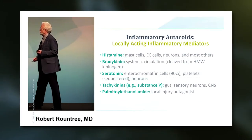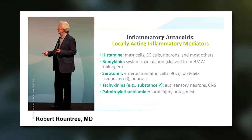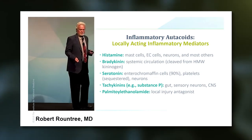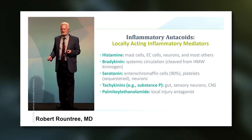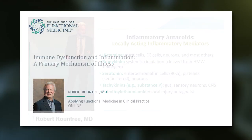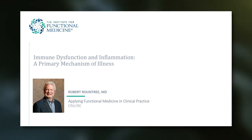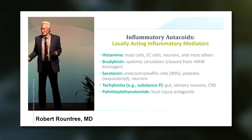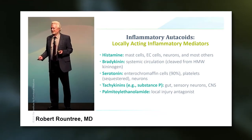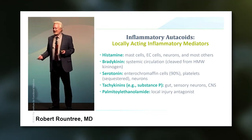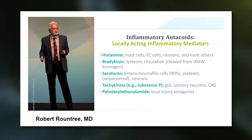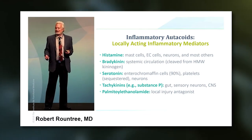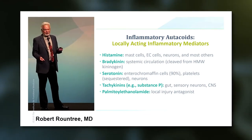What are some of these locally acting mediators? One that's very interesting is histamine, which is stored in mast cells, enterochromaffin cells, and in neurons. Then there's bradykinin, serotonin — you thought serotonin was a neurotransmitter, didn't you? Its main role in the body is as an inflammatory mediator. Tachykinin — you've probably heard of substance P for pain — and then one called palmitoyl ethanolamide, PEA, which is a local injury antagonist.